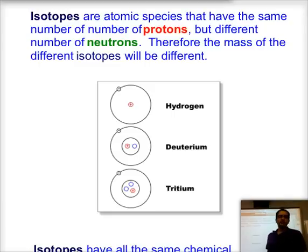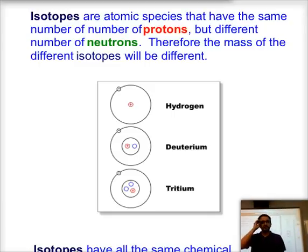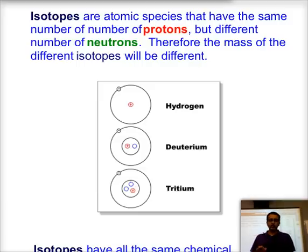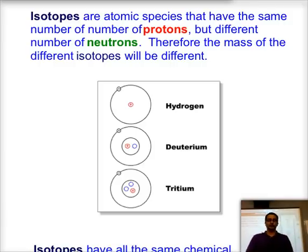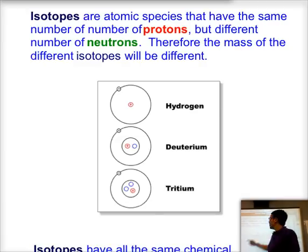Now I want to focus on isotopes. Isotopes are species that have the same number of protons — meaning they are the same element — but they have a different number of neutrons, and therefore their mass number is going to be different.